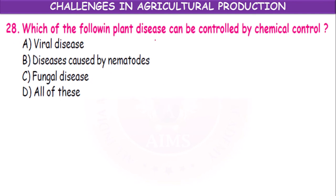Which plant disease can be controlled by chemical control? Viral disease, disease caused by nematodes, fungal disease, or all of these? For every disease there is some chemical control — for insects use insecticides, for pests use pesticides, for fungi use fungicides, for bacteria use antibiotics. However, there is no chemical to control viral disease in plants; only disease-resistant varieties must be used for viral diseases.